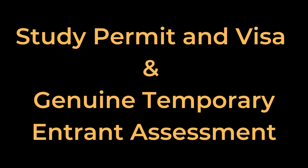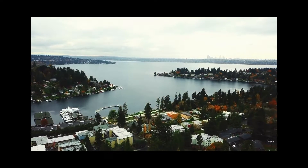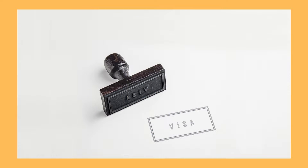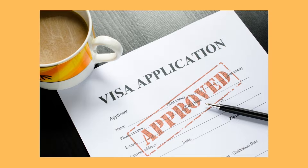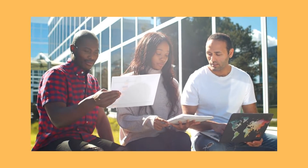Study Permit and Visa and Genuine Temporary Entrant Assessment. Choosing to study in Australia is a significant step forward towards a promising future. You must first finalise a few crucial pieces of information before proceeding. The student visa, subclass 500, is one of the most important things you'll need. The student visa permits you to live, work, and study in Australia for up to five years, depending on your degree.